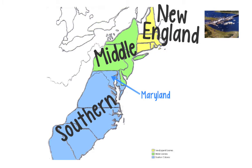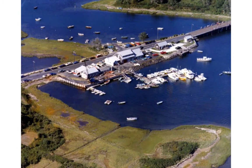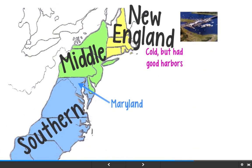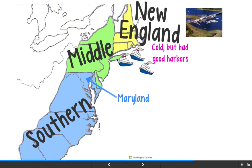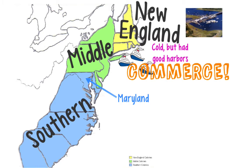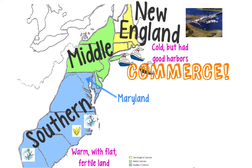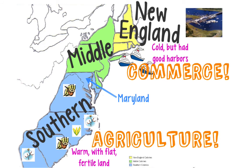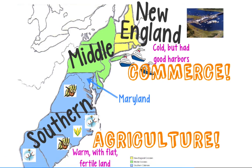Let's talk about climate, land, and economy for a minute, because that's something you struggled with on the quiz. New England — we know it's very cold up there, but it has very good harbors and rocky soil. Not good for farming, but good harbors. For those of you who don't know what a harbor is: you've got water, and boats can come into the harbor right next to the land. So boats are coming into the harbors in New England, picking up stuff and sailing away — that's called trade or commerce. So they have a commercial economy in New England; they make money by trading. In the South, it's warm with flat, fertile soil. With this flat fertile soil they can grow things like cotton, corn, and tobacco. So in the South we have an agricultural economy, and in New England they trade, which is a commercial economy.